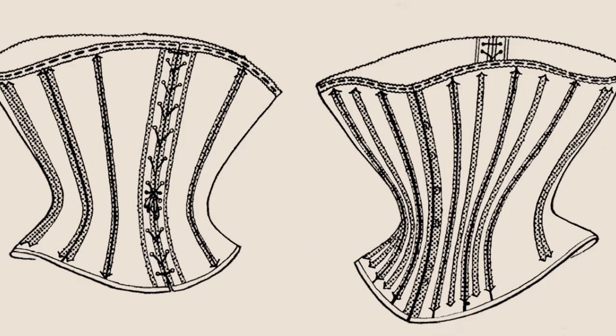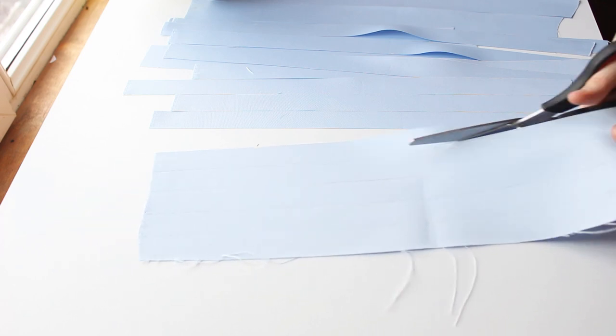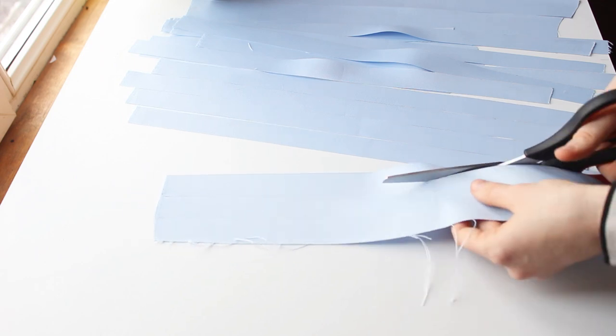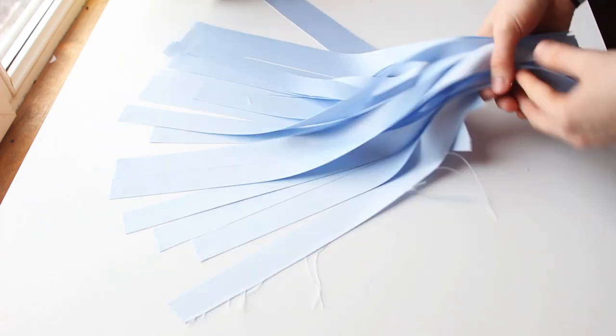Then using the scraps of fabric, I cut boning channels and bias tape. There are 16 boning channels, 10 of them placed on the seams and 6 on the panels, to make it more structural. Also 4 of these 16 channels should be wider to fit 2 bones each.